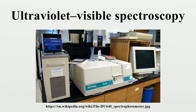Ultraviolet-visible spectroscopy, or ultraviolet-visible spectrophotometry, refers to absorption spectroscopy or reflectance spectroscopy in the ultraviolet-visible spectral region. This means it uses light in the visible and adjacent ranges. The absorption or reflectance in the visible range directly affects the perceived color of the chemicals involved. In this region of the electromagnetic spectrum, molecules undergo electronic transitions.